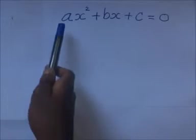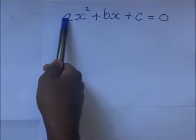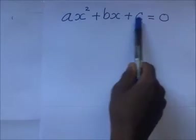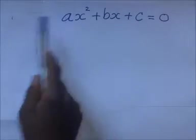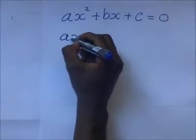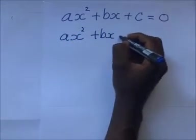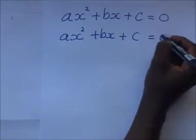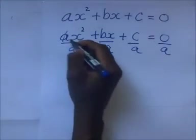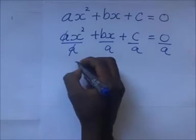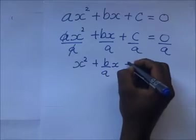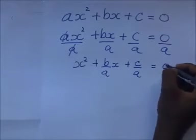When we are completing squares, we always have to make sure that the coefficient of x squared is one. Now if the coefficient of x squared is not one, it means that you are supposed to first divide through all terms by that coefficient so that it becomes one. So our next step is to divide through by a, so we divide each term by a. This a and that a cancel out, and you remain with x squared plus (b/a)x plus c/a equals zero.